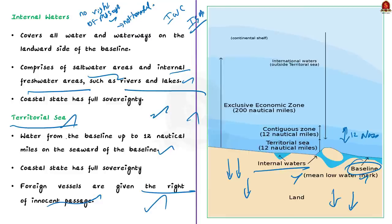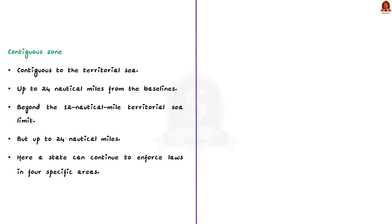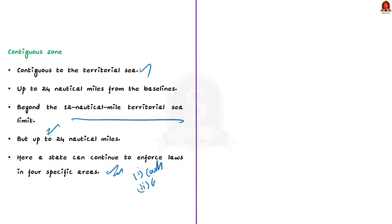Moving on, let us take the contiguous zone. This is the zone contiguous to the territorial sea — it extends up to 12 nautical miles from the edge of the territorial sea, meaning from 12 to 24 nautical miles from the baseline. Here, a state can continue to enforce laws in four specific areas: customs, taxation, immigration and pollution. So it can prevent and punish violations of laws related to these areas only. Importantly, in the contiguous zone, the state has jurisdiction only on the ocean's surface and floor — it does not have rights over the airspace. These are some of the important classifications made by UNCLOS.